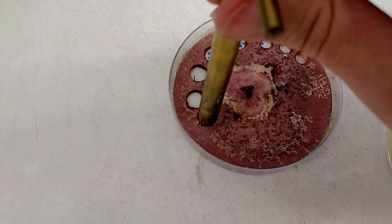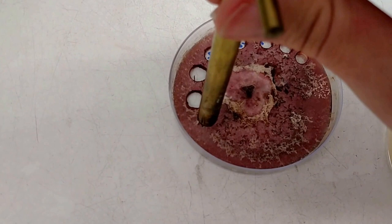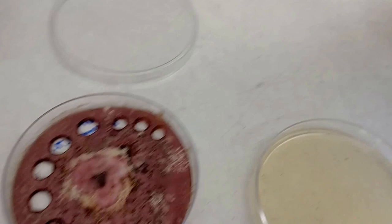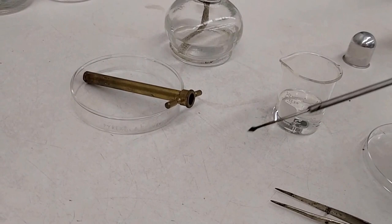So what I'm going to do here is I'm going to get the borer, stick it in the plate into the agar, make a nice little hole. I'm going to put it down and then also I'm going to grab something to pick that little ring up that I just made.